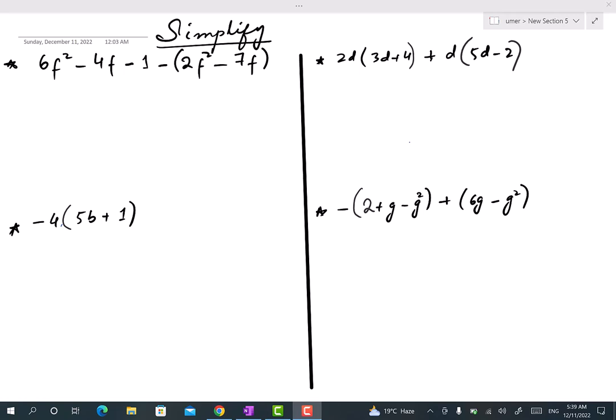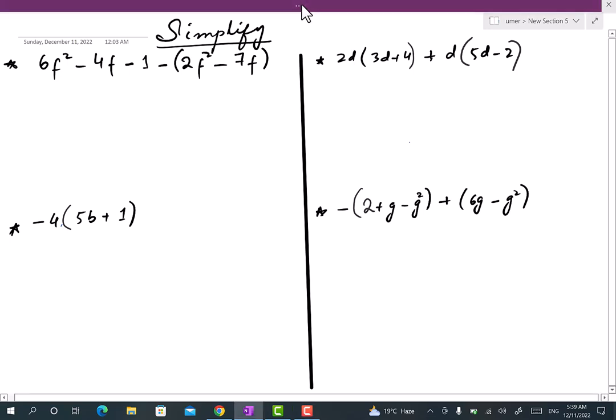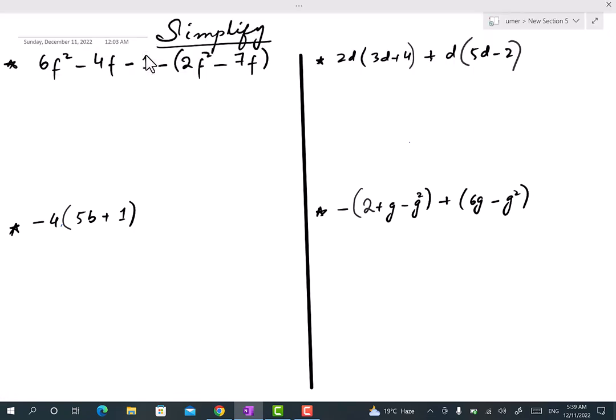So guys, in this video we will be practicing some simplification questions. Let's start with this question. We will be first of all opening this bracket and then arranging the same variables together. Now by opening this bracket, the minus sign will be multiplied with the members of this bracket.